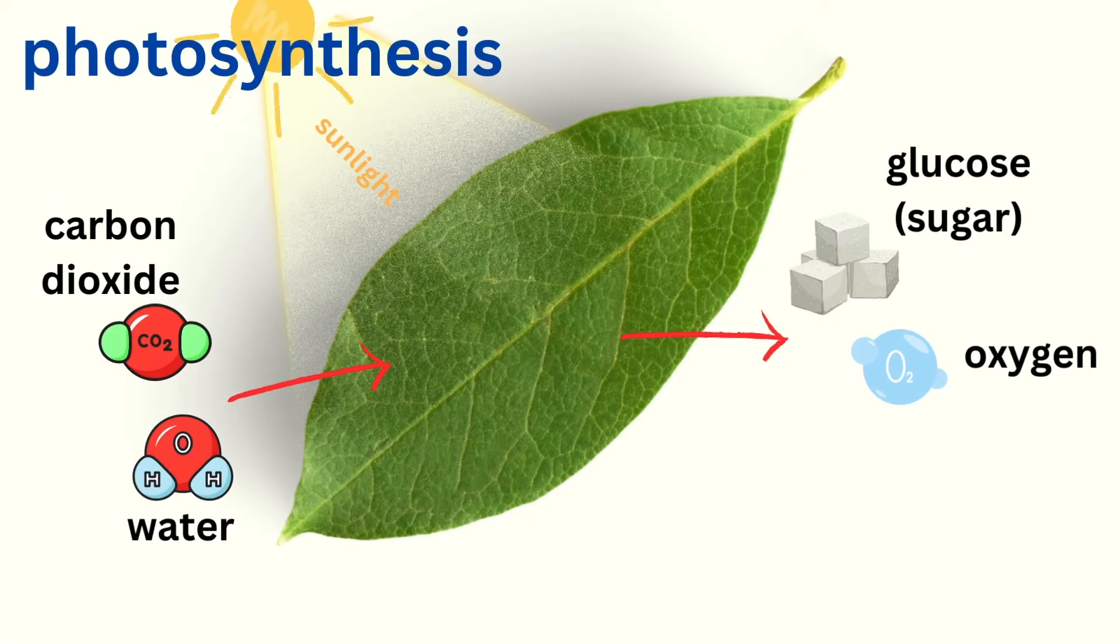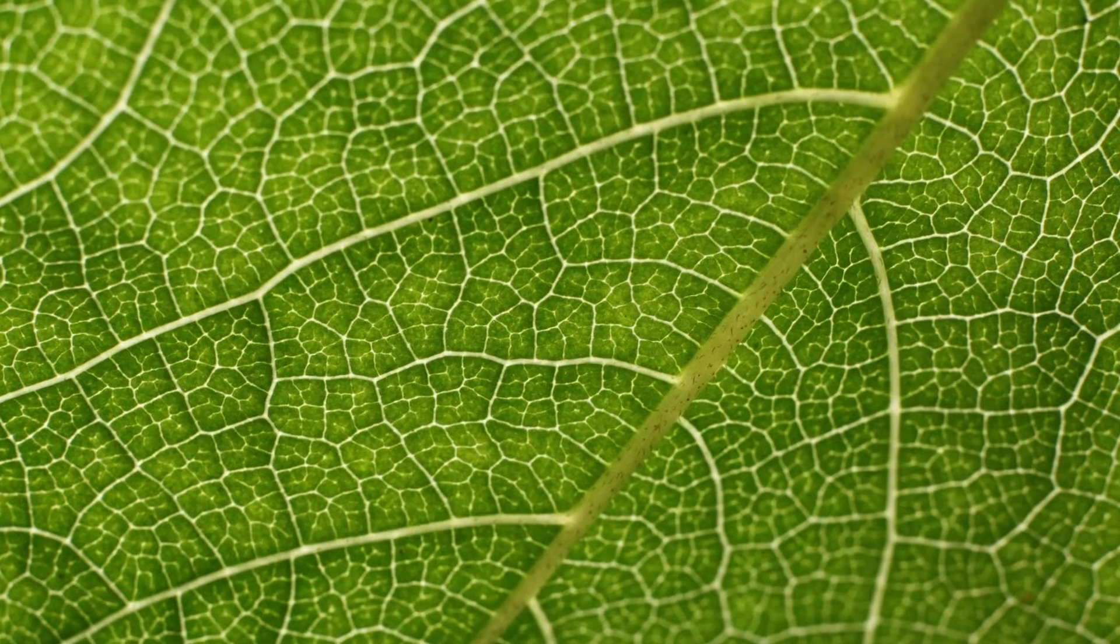Now that we know how water, carbon dioxide, and sunlight help a plant make food, let's take a closer look at where this process actually happens.